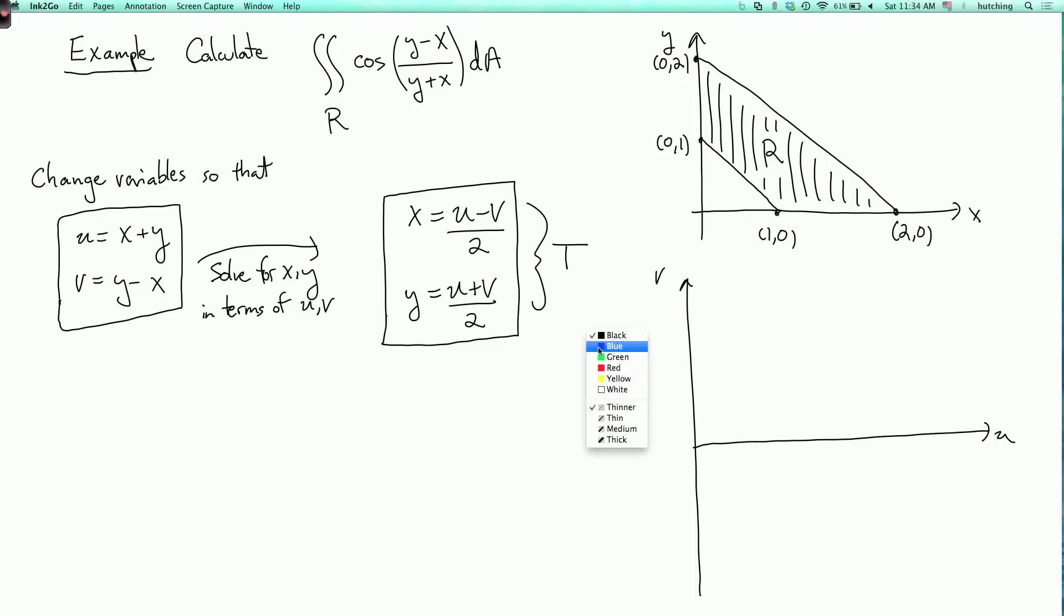So let's first figure out what's happening to the boundary edges. So this boundary edge up here, this is the line x plus y equals 2. Now remember that x plus y is equal to u. So this line corresponds to the line u equals 2 over here.